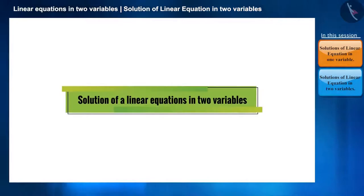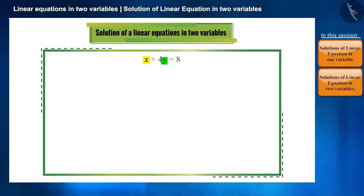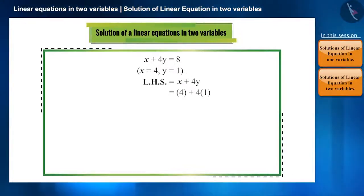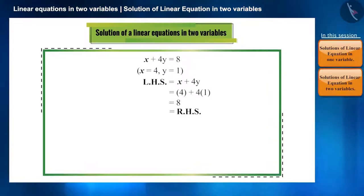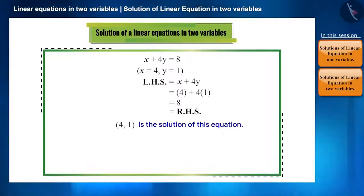Will the linear equation in two variables also have only one solution? Let's understand this with an example. The equation x plus 4y is equal to 8 has two variables. We can say that when the value of x is equal to 4 and the value of y is equal to 1, this equation will be satisfied. Therefore, x equals 4 and y equals 1 is the solution of this equation. We can write this solution in parenthesis as the ordered pair 4 comma 1.